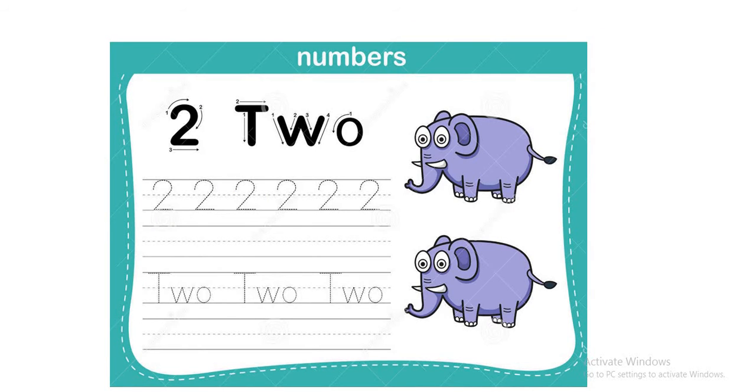And then number 2. So it's 2 in standard form, and two in word form. So it's number 2. And how can I write 2 in word form? T-W-O. So this is number 2 and T-W-O in word form.